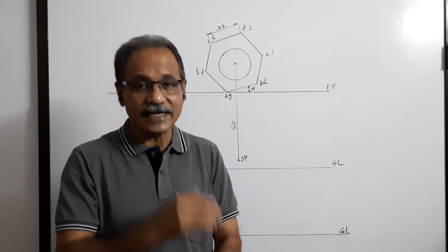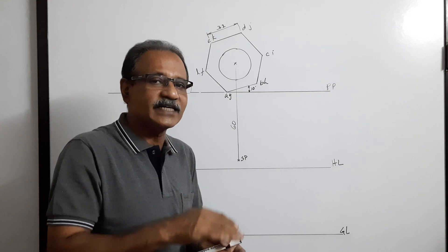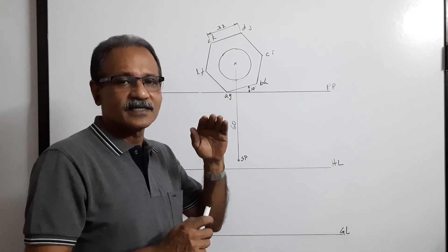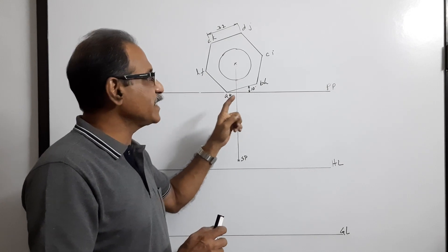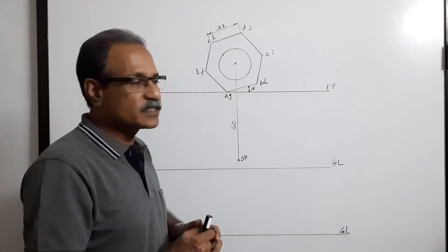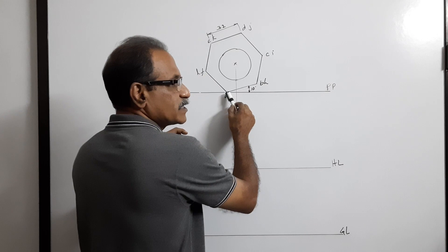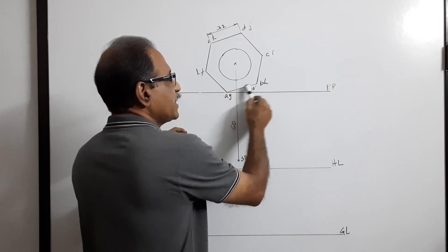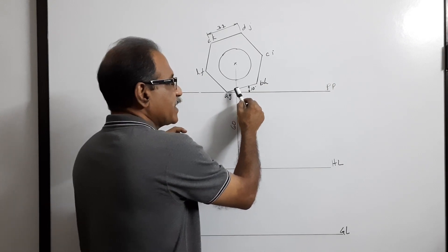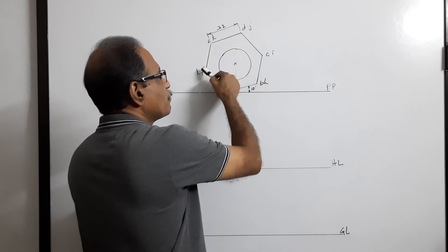In this case, it is a hexagonal nut of 32 mm side resting on the ground with a vertical edge touching the picture plane, in such a way that one side of the hexagon makes 10 degrees to the picture plane. So what I do is I draw picture plane PP and draw a hexagon with a corner touching the picture plane and one side making 10 degrees to the picture plane, and I complete the hexagon.